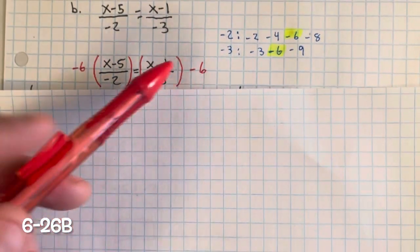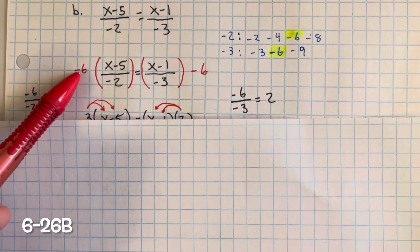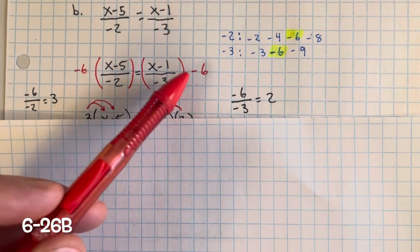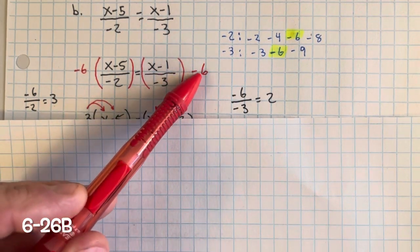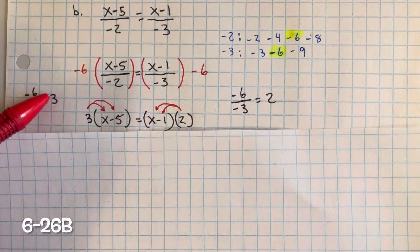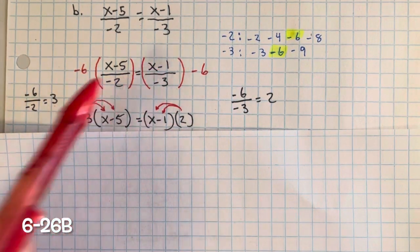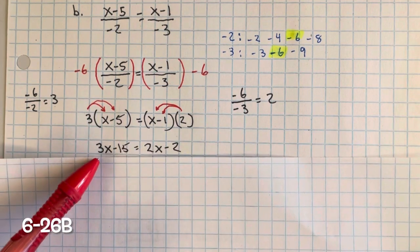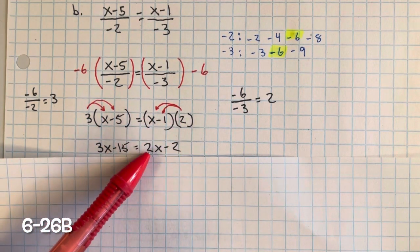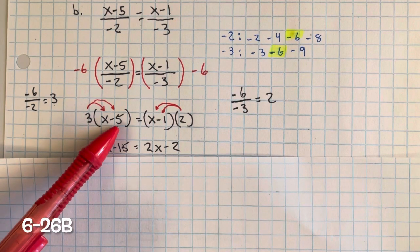We're going to multiply both sides of the equation by negative 6. Negative 6 divided by negative 2 is positive 3. On the right side, negative 6 divided by negative 3 equals 2. So we're left with 3 to distribute to the left side and positive 2 to distribute to the right side. 3 multiplied by x is 3x, and 3 multiplied by negative 5 is negative 15. 2 multiplied by x is 2x, and 2 multiplied by negative 1 is negative 2. Remember, when you use the distributive property, you have to multiply to each term inside the parentheses.